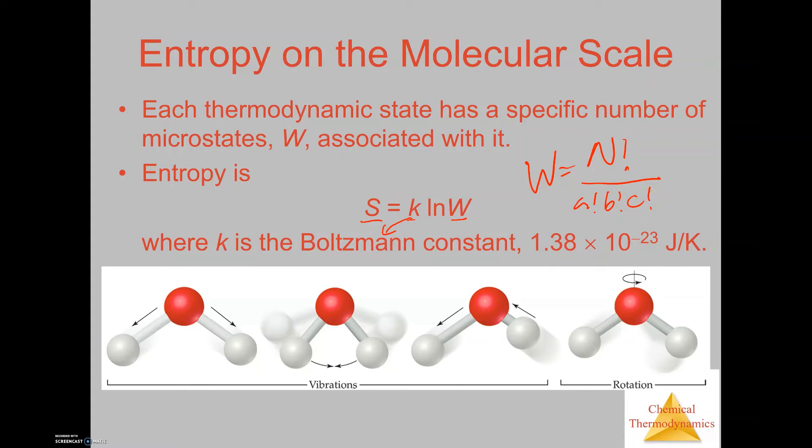W is equal to N factorial divided by A factorial, B factorial, and C factorial. This equation doesn't make a whole lot of sense, but on the next slide I will explain what this particular equation means. I'm hoping that everybody understands what a factorial symbol is. If I have three factorial, that's just the same as saying three times two times one.